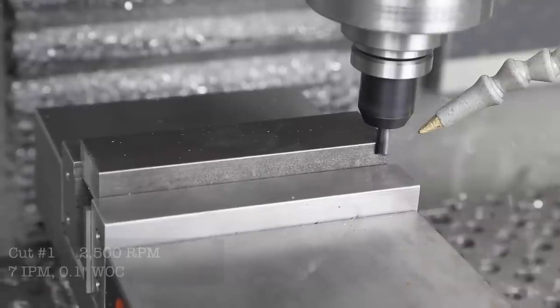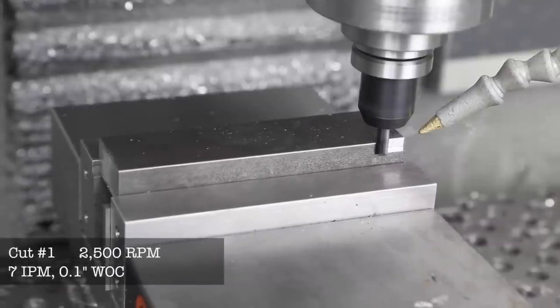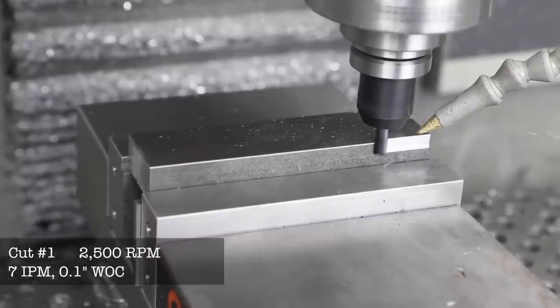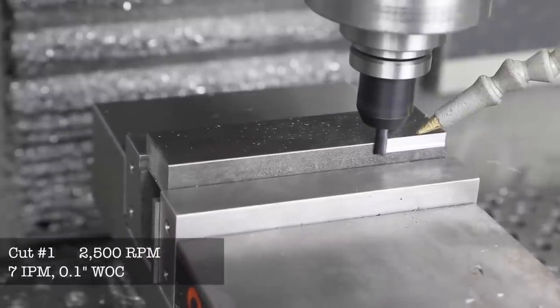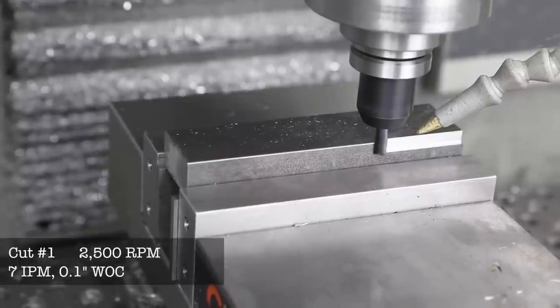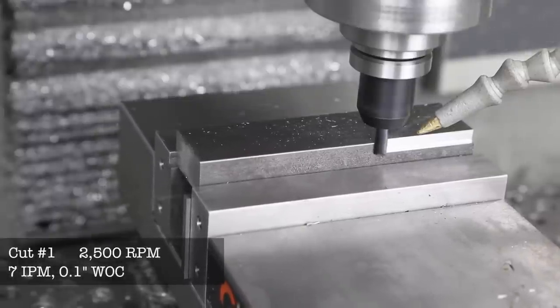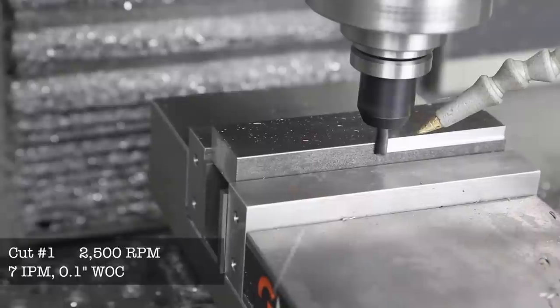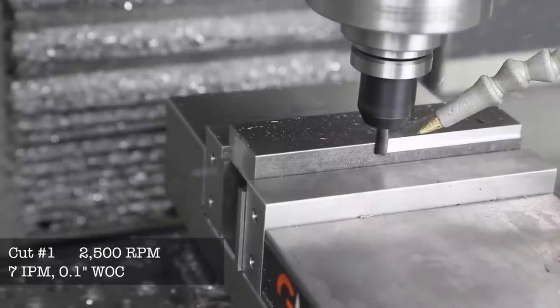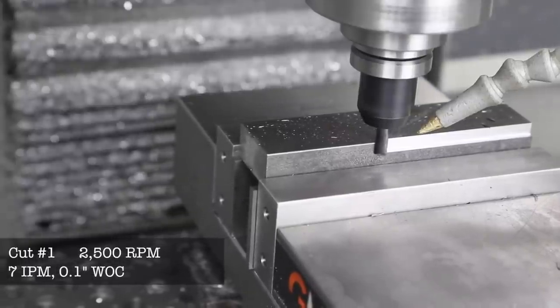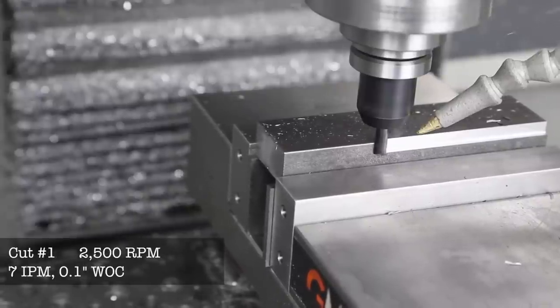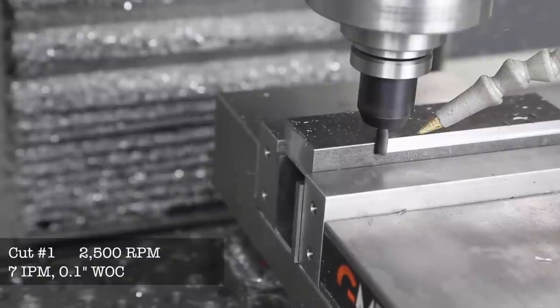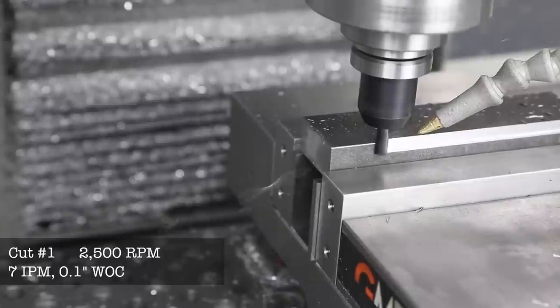I'm calling this our control or base cut. This is the cut that got me so interested a few weeks ago. Don't worry folks, all this information is available at the end of this video and there's a link in the description to download the worksheet. This is cut number one, our baseline control: 2,500 RPM, 7 inches a minute, full depth of cut at a quarter inch and 0.1 inch width of cut. It's a great cut. You can see the chips. Sounds beautiful, surface finish is great. Just an awesome cut.